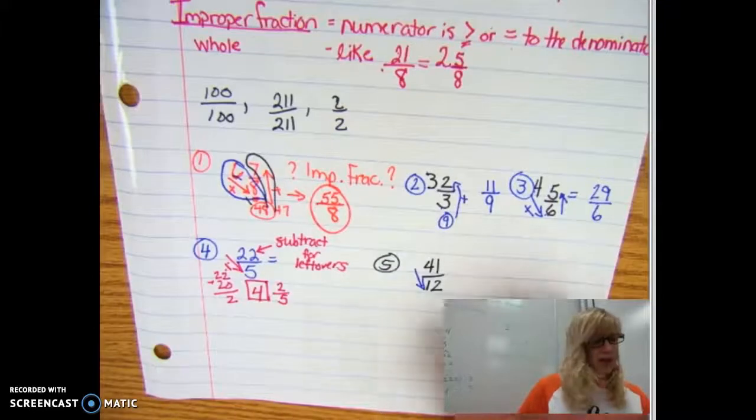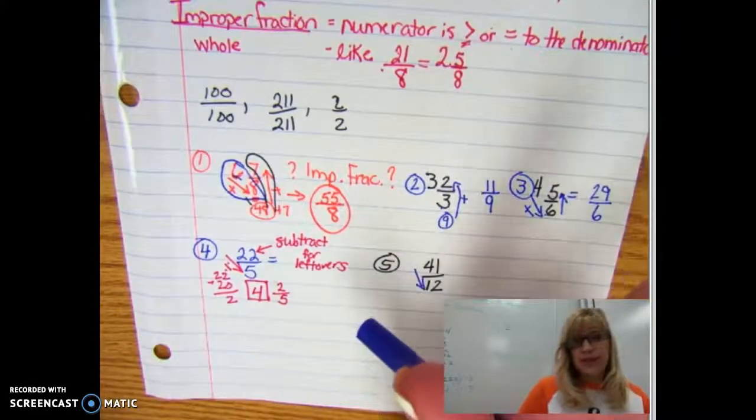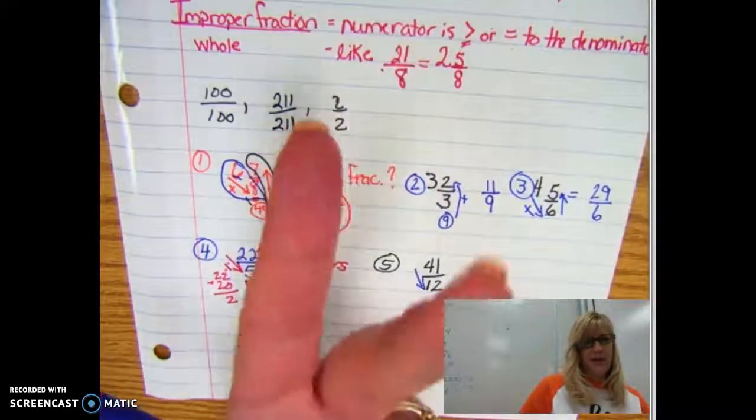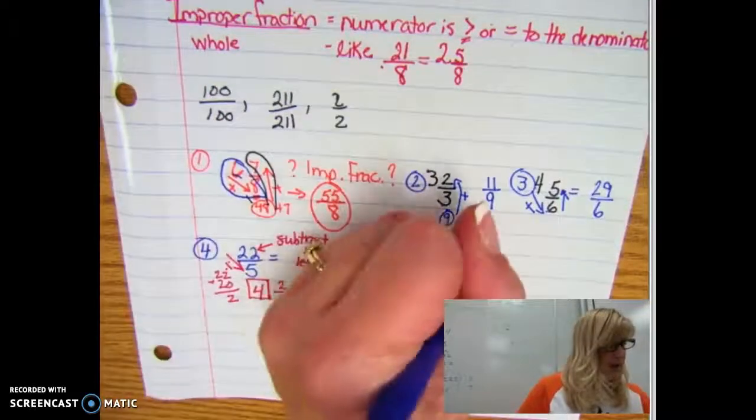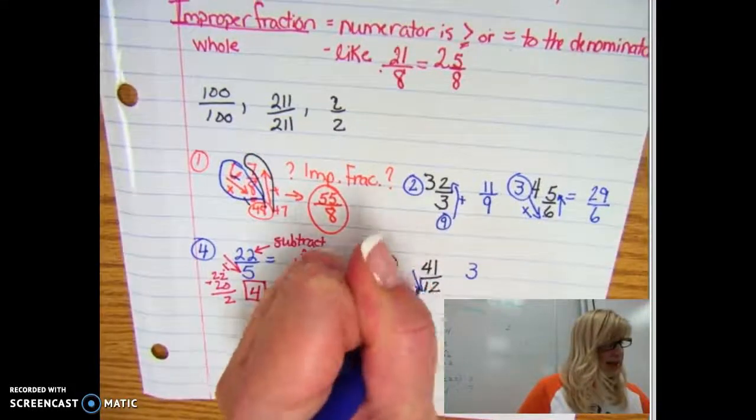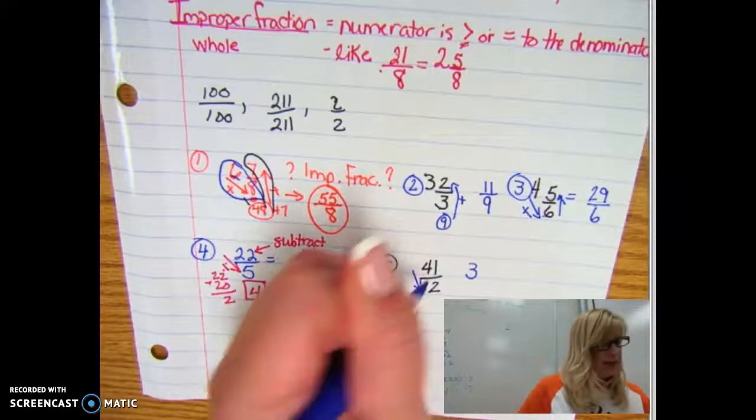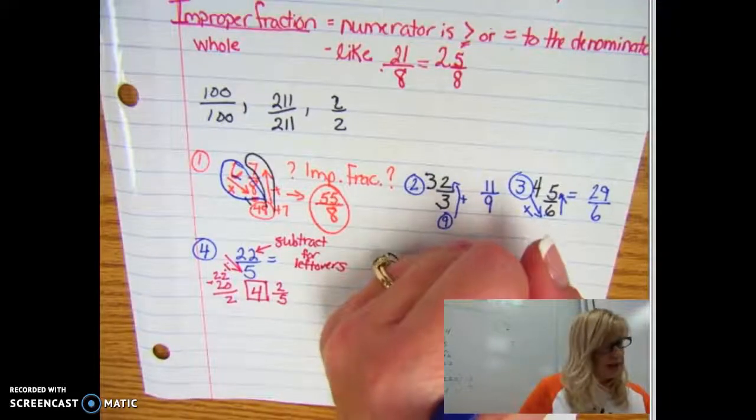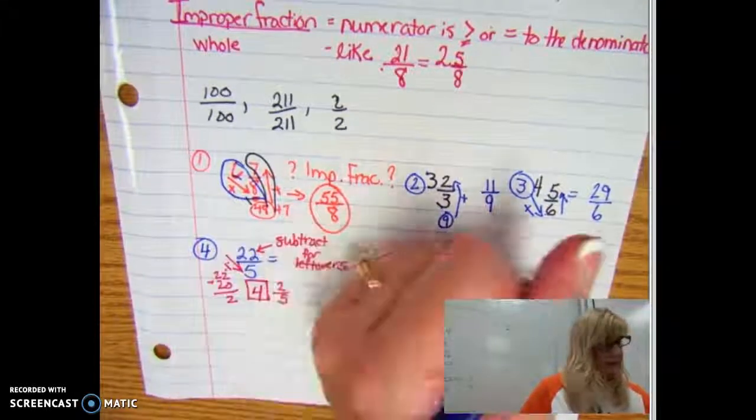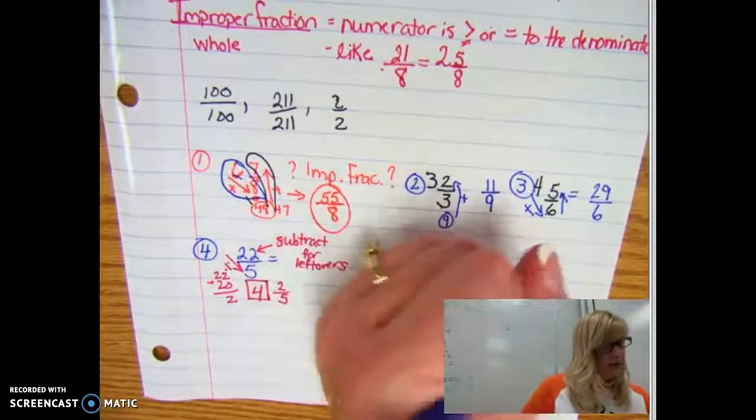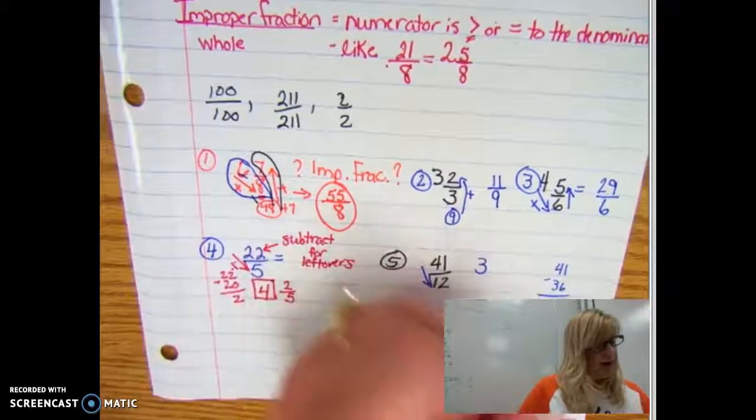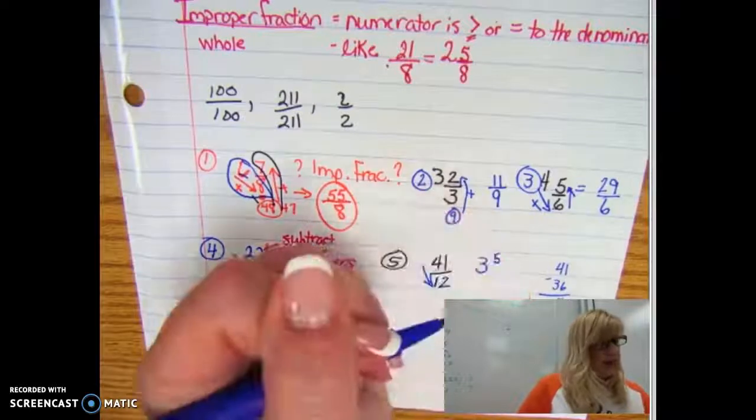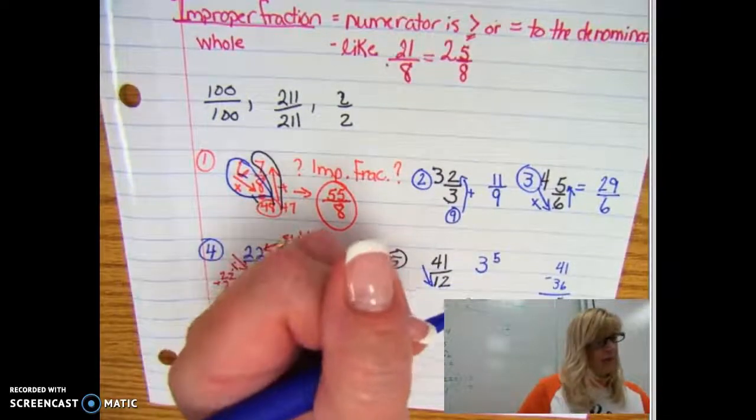And now I got to 36 and I need to see what the difference is from 41. So off to the side sometimes I'll do 41 minus 36, and some of you could do this mentally but it's good to have the work off to the side. And I see that there are five leftovers.